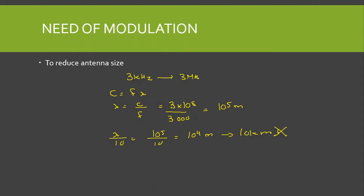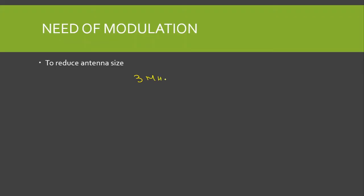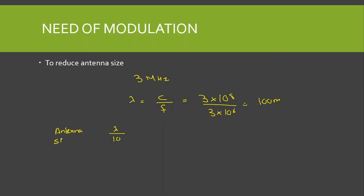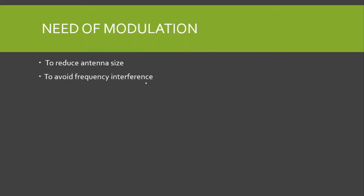If we convert the signal to 3 megahertz and again use the formula λ = c/f, with c = 3×10⁸ meters per second, we get λ = 100 meters. If the antenna size is λ/10, that becomes 10 meters, which is practically possible. So modulation is performed to reduce the antenna size.